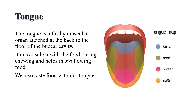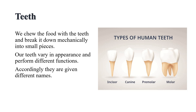Do you know the function of the tongue? We use our tongue for talking. Besides, it mixes saliva with the food during chewing and helps in swallowing food. We also taste food with our tongue. It has taste buds that detect the different tastes of food. Now let's discuss about the different kinds of teeth that are present in our mouth.